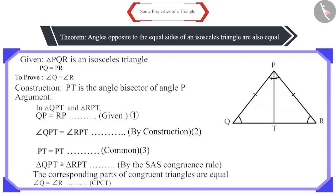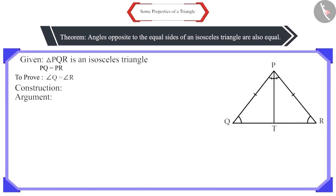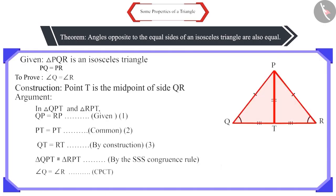Friends, we can prove these two triangles congruent by some other methods also. For example, if we take the midpoint of side QR as T and draw a line PT. Now, we can see that in both triangles, all three sides are equal.